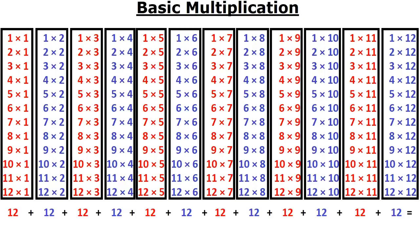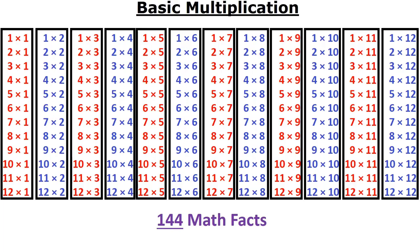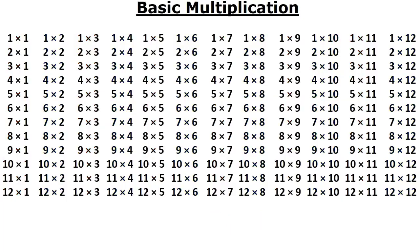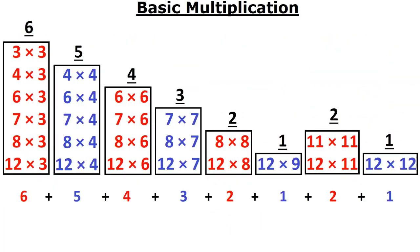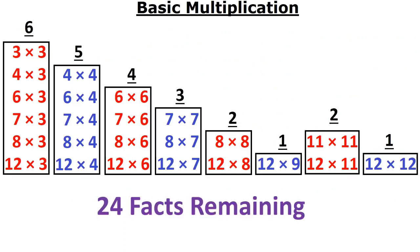So right off the bat, from 1 times 1 to 12 times 12, that's a total of 144 multiplication tables. That's a whole lot of things to remember. However, we created a method where if you just know 6 rules, just 6 rules, you can go from 144 down to only 24 remaining.